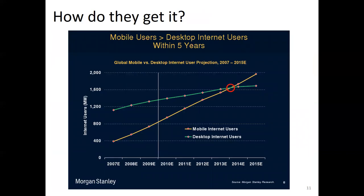According to the graph, the green line represents desktop internet users and the yellow line represents mobile internet users. From time to time, the percentage of people using smartphones and the internet is growing rapidly, while desktop internet users are relatively flat and not fluctuating significantly.